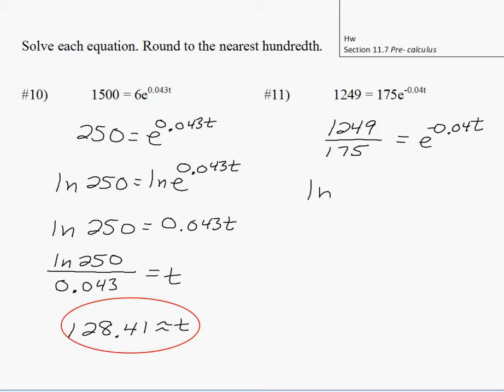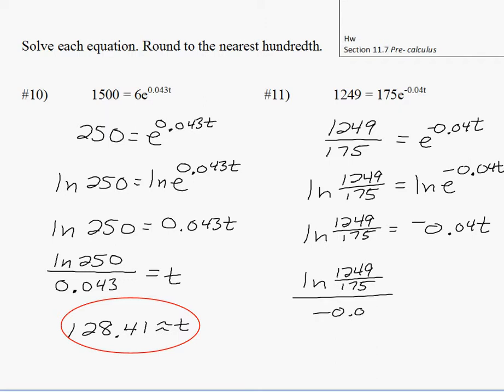Then if you take natural log to both sides, on the right side it's going to simplify to just the exponent, negative 0.04t. Divide both sides by negative 0.04t. Put it in your calculator. Make sure you put parentheses around the argument for natural log. And you get negative 49.13.